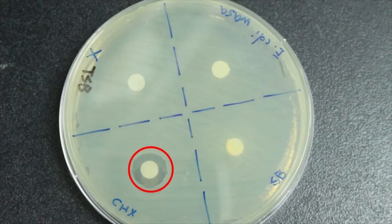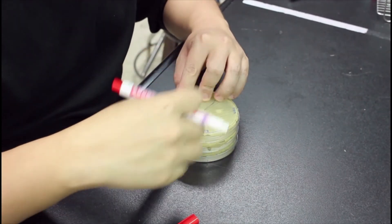Now after 24 hours of incubation, you can see the inhibition zone, which is the transparent area on the plate. What I'm going to do now is to measure it.